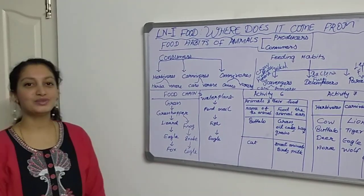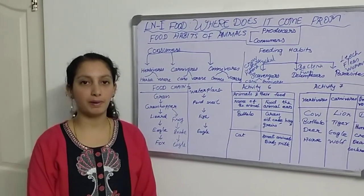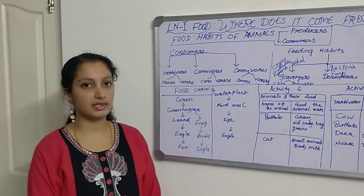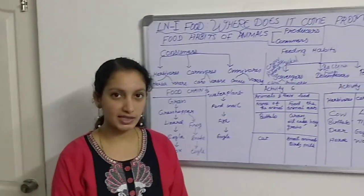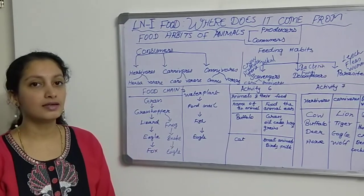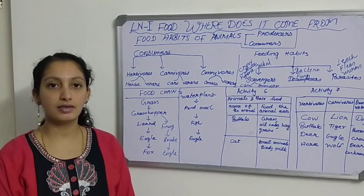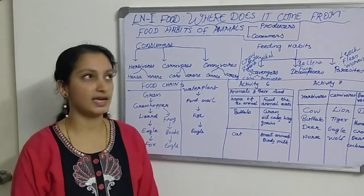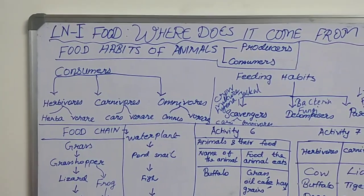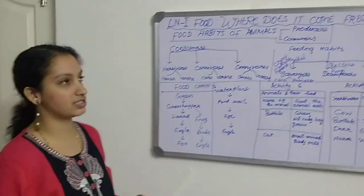Hi, welcome back to Science Magic Platform. Today I am here with the third part of lesson 1, Class 6 CBSE — 'Food: Where does it come from?' In the first part of the video we saw the ingredients, the second part was about the sources of food, and in the third part we are going to see food habits of animals.